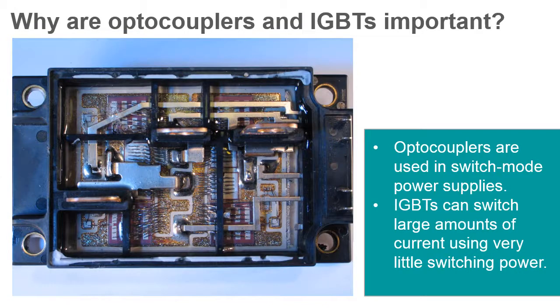IGBTs offer advantages over both power MOSFETs and BJTs that help to reduce the cost of producing the devices the circuits are used in, as well as in the amount of power required by those devices.